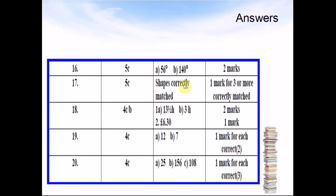Question 17: The shapes correctly matched. Question 18: A was 13.5 hours. B was 3 hours. Question 19: 6.30.